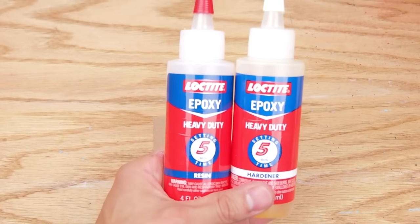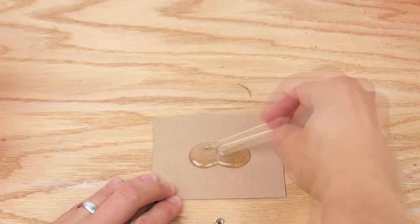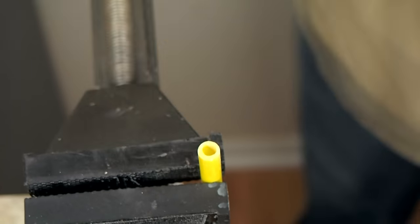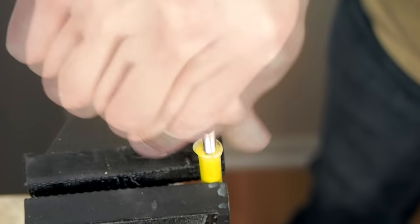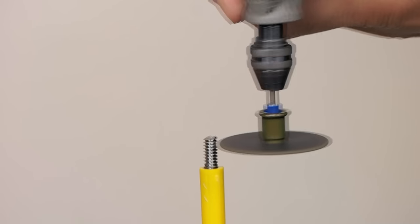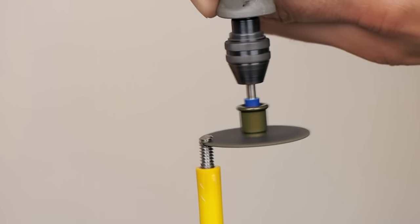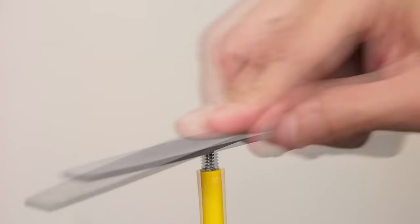I mixed up some two part epoxy then filled the hole. Link in the description. Then I twisted the piece of bolt into the hole making sure not to trap any large air bubbles. Once the epoxy had cured I cut the bolt so that about a quarter inch was exposed and I cleaned up the edge with a file.